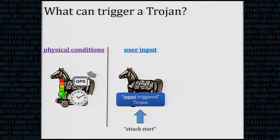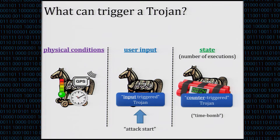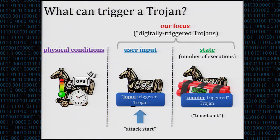There can also be user inputs, so the Trojan can simply receive instructions to start behaving maliciously from the outside via some digital channel. Or there can be some internal state — counting the number of executions. For example, after 1,000 executions the device stops working, sometimes called a time bomb in the practical community. In this talk we are interested in the latter two types: digitally triggered Trojans, not physically triggered ones.